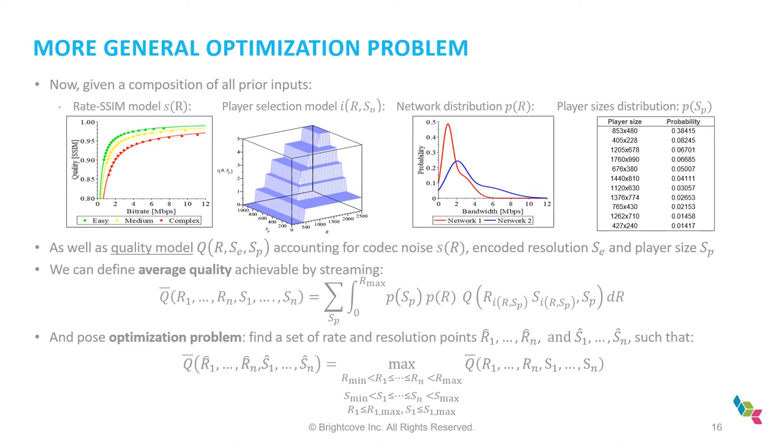And then as we know this average quality expression, we can pose the optimization problem. So in this case, we need to find a set of rate and resolution points such that this combined figure of merit, which is quality computed based on all these factors, is maximum subject to certain constraints. It's that rates are increasing within certain range, resolutions are increasing in certain range. And we also typically impose certain limits on first rendition in the ladder because that affects the buffering probability and some other things. So this is usually also important extra constraint to the problem.